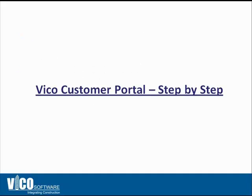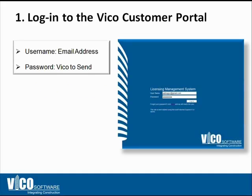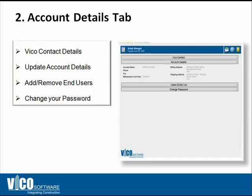I'm going to touch on a brief step-by-step before I go into the live demonstration just to get you familiar with what you're looking at. We're going to send you a URL and that's going to be the login page to the VICO customer portal. Here you would use your email address as your username and we will send you a password. When you log into the account you'll be presented with the account details tab, which is essentially the dashboard for the customer portal. Here you can see who your VICO contact is, update your account details and contact information, manage your users, add and remove users, as well as change your password. Make sure to change your password upon entering for the first time so you can have a secure entry.